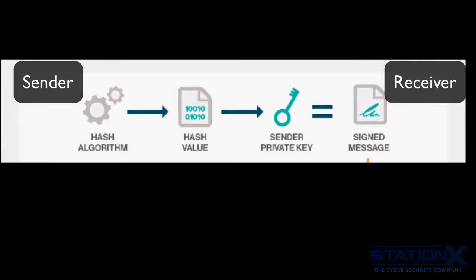A digital signature is a hash value — the fixed-length result of a hash function — that is encrypted with the sender's private key to produce the digital signature or the signed message. The digital signature is technically a stamp of approval for the signer.